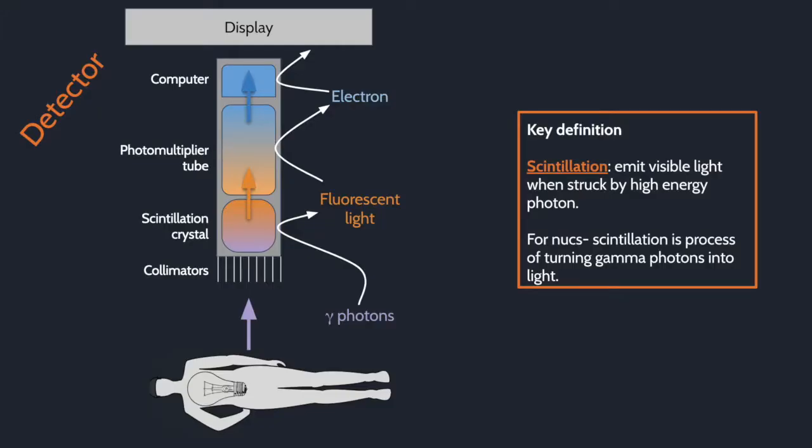Now that we know that both general nukes and PET use gamma rays, it's important to know the basics of the detector. Gamma rays first go through a collimator to filter out any stray gamma rays. They then hit a scintillation crystal, which converts the gamma photon into fluorescent light. This is an important definition you will hear many times. Scintillation is the process of converting a gamma photon to fluorescent light photon, which is lower energy. It then goes through a photomultiplier tube, which converts the light into an electric signal which the computer can process.